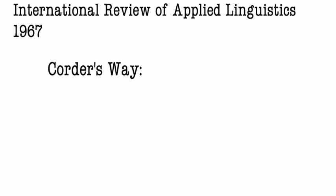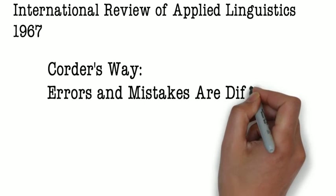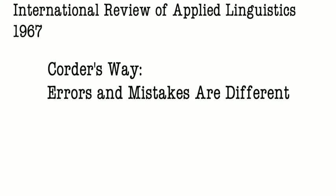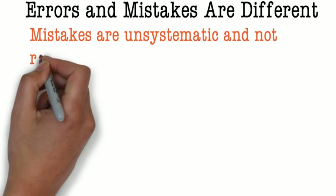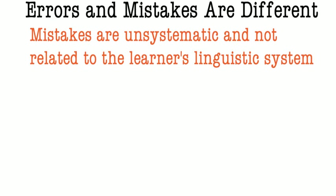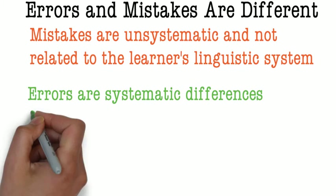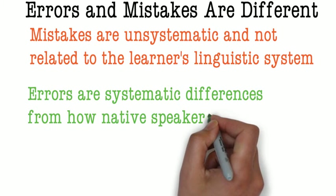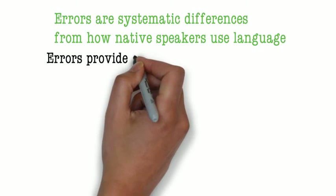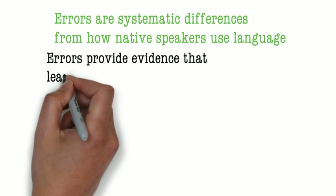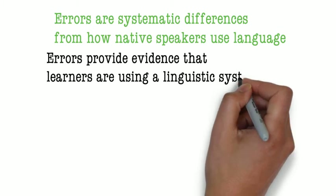Corder makes a distinction that many still uphold today between errors and mistakes. Mistakes are errors of performance that native speakers make as well, such as slips of the tongue, and may stem from fatigue, memory lapses, or strong emotion. Mistakes are unsystematic and don't really provide useful information about the learner's progress. Errors, on the other hand, are systematic differences from how a native speaker would say something. Corder emphasizes that these patterns are evidence that the learner is working with a real linguistic system that simply hasn't become the same as a native speaker's, an idea Larry Selinker made famous a few years later in his article on interlanguage.